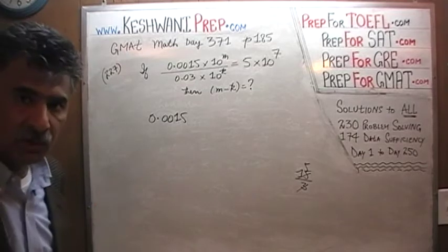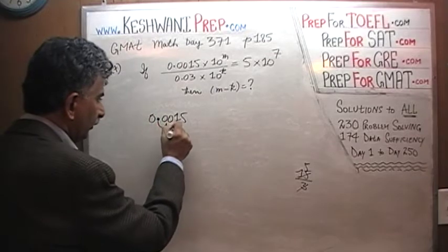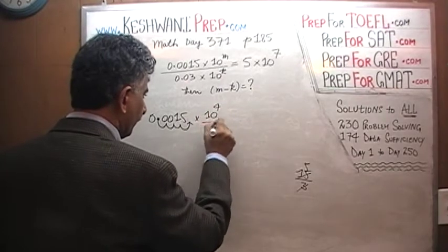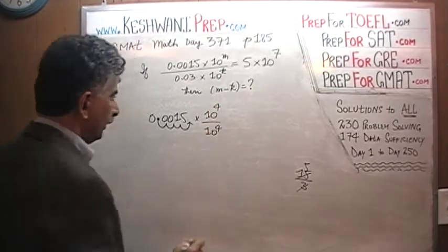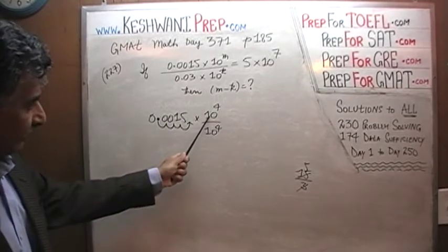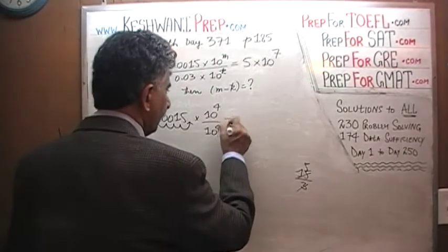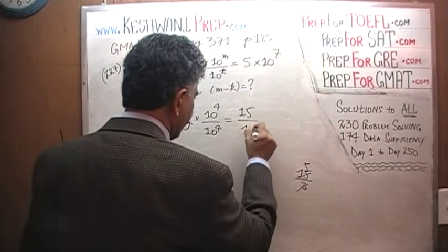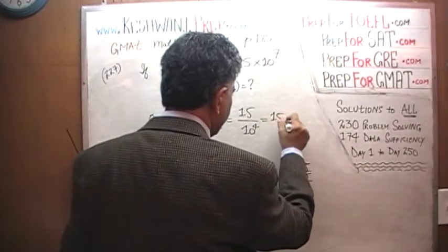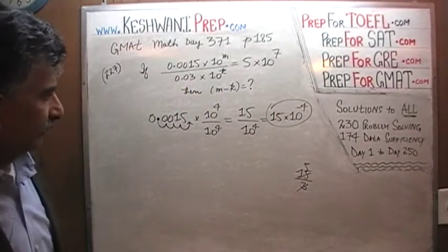So how can we convert 0.0015 into a whole number? This is a decimal and we have to move 4 places — 1, 2, 3, and 4. If we multiply by 10 raised to 4, then 10 raised to 4 times 0.0015 will remove the decimal 4 places to the left, and it will become 15 over 10 raised to 4, which can be written as 15 times 10 raised to negative 4. That part is done.